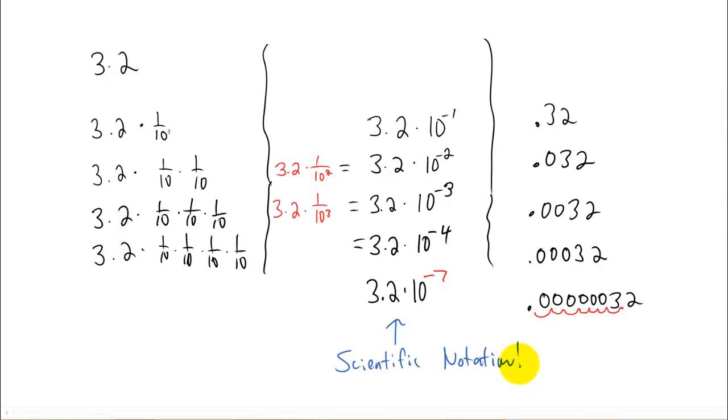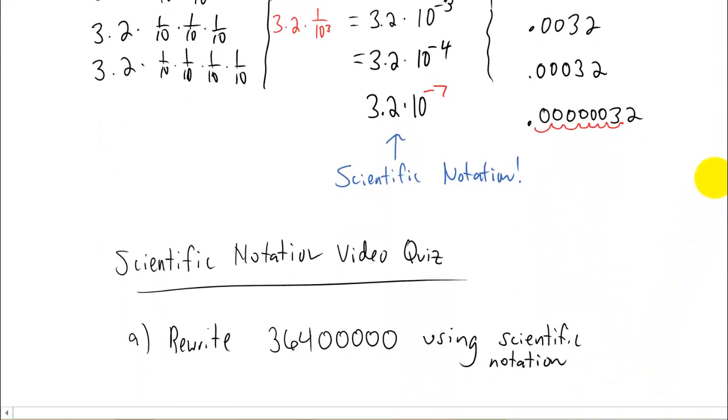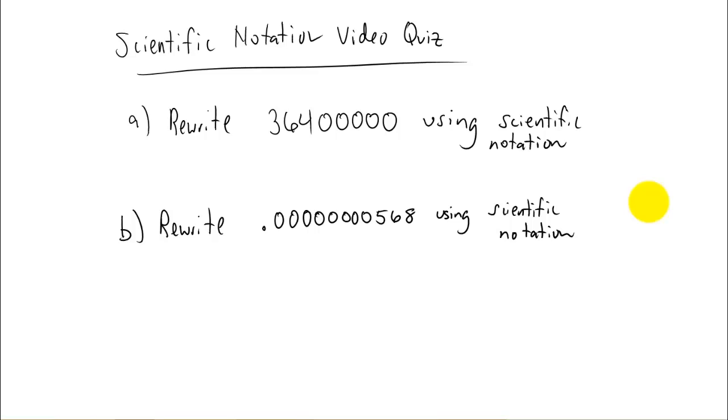Scientific notation is really good at writing numbers that are very, very small—that's a lot of zeros after the decimal place—or very, very big numbers. Okay, that's your brief introduction to scientific notation. See if you can do a couple of problems. Rewrite this really big number using scientific notation, and also rewrite this really small number using scientific notation. Just follow the patterns that we established above, and hopefully you can figure it out. Alright, I'll see you in the next video.